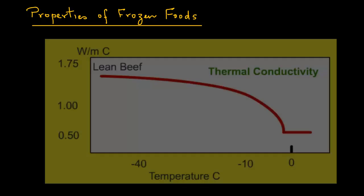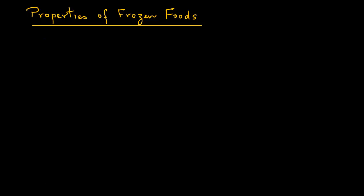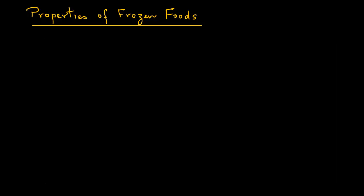The thermal conductivity of lean beef increases as the temperature is lowered in the sub-freezing temperature range, approaching high values near the thermal conductivity of ice at 2.22 watts per meter degree Celsius. Therefore, we need a quantitative understanding of these changes and the ability to estimate these properties as a function of temperature.